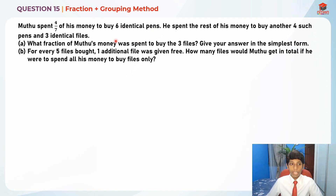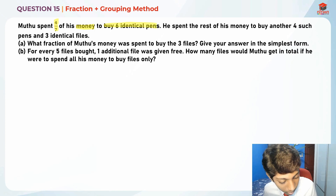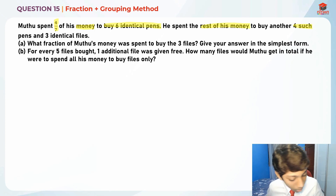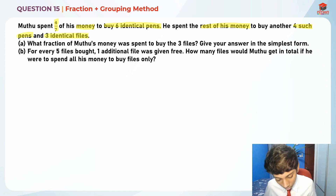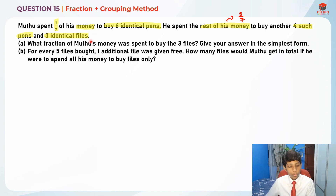Let's read the question first. Muthu spent four-sevenths of his money to buy six identical pens. He spent the rest of his money to buy another four such pens and three identical files. So the rest of his money is three-sevenths. For part A, they are asking: what fraction of Muthu's money was spent to buy three files? Give your answer in the simplest form.